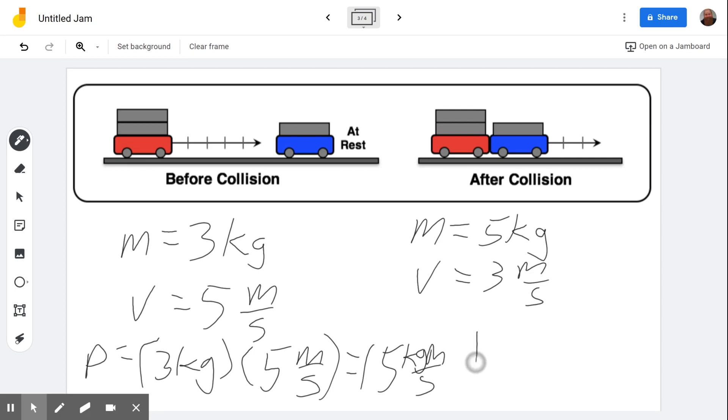And if we do p equals mv, then we get five kilograms, three meters per second. And that gives us 15 kilogram meters per second. And since the momentum before the collision was equal to the momentum after the collision, that means this collision could take place. If this cart slammed into this at rest, they would move off. If they stuck together, they would move off at that speed. That is accurate.